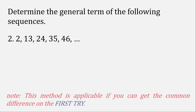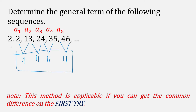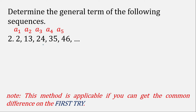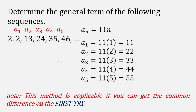Let's try another example. Check for a common difference: 13 minus 2 is 11, 24 minus 13 is 11, 35 minus 24 is 11, 46 minus 35 is 11. There is a common difference on the first try, so we write the initial formula a sub n = 11n. Evaluating gives 11, 22, 33, 44, 55 — far from our sequence 2, 13, 24, 35, 46.